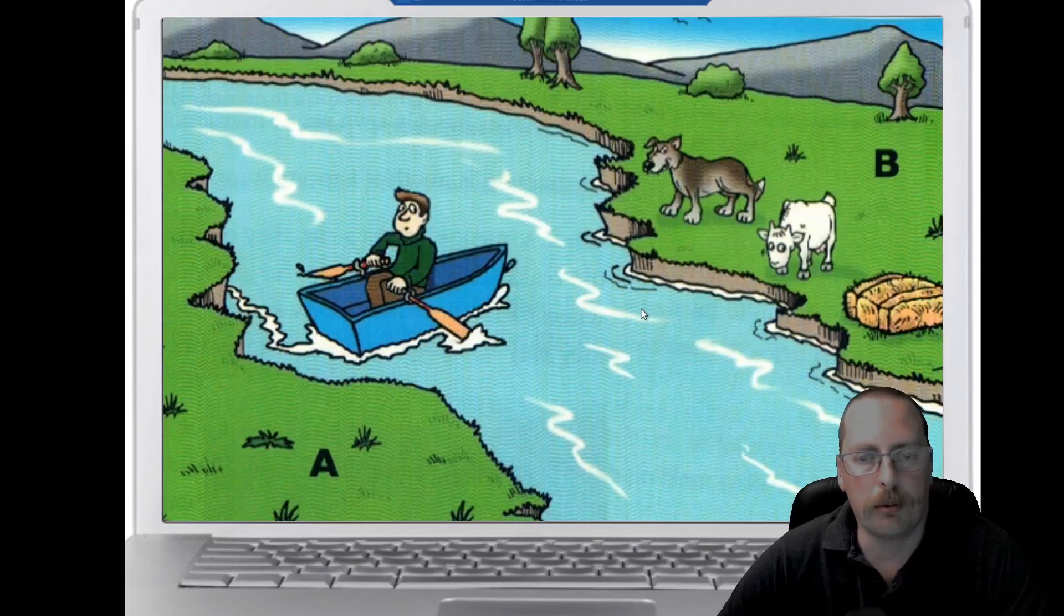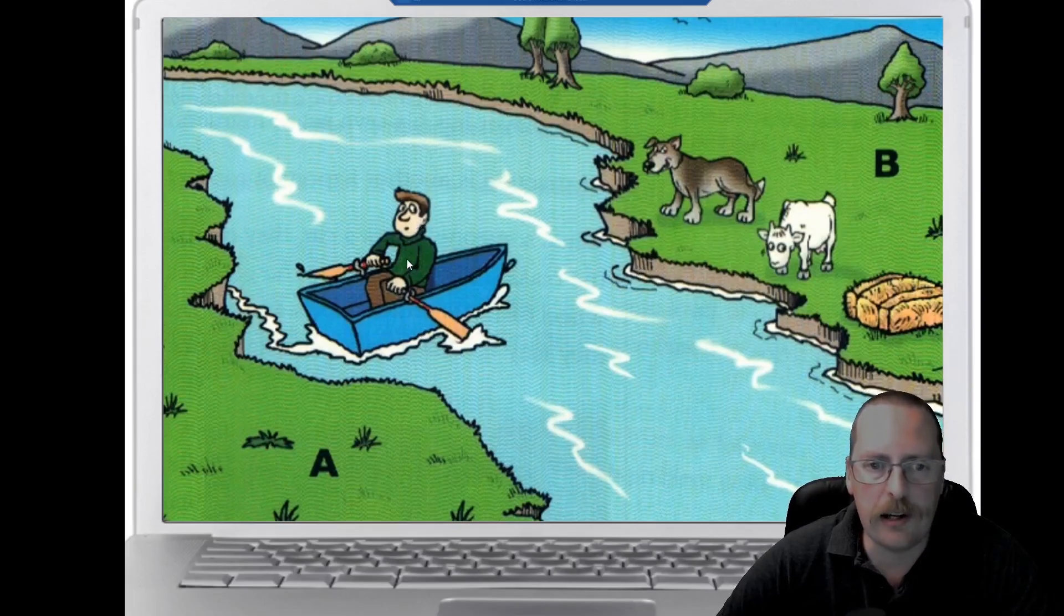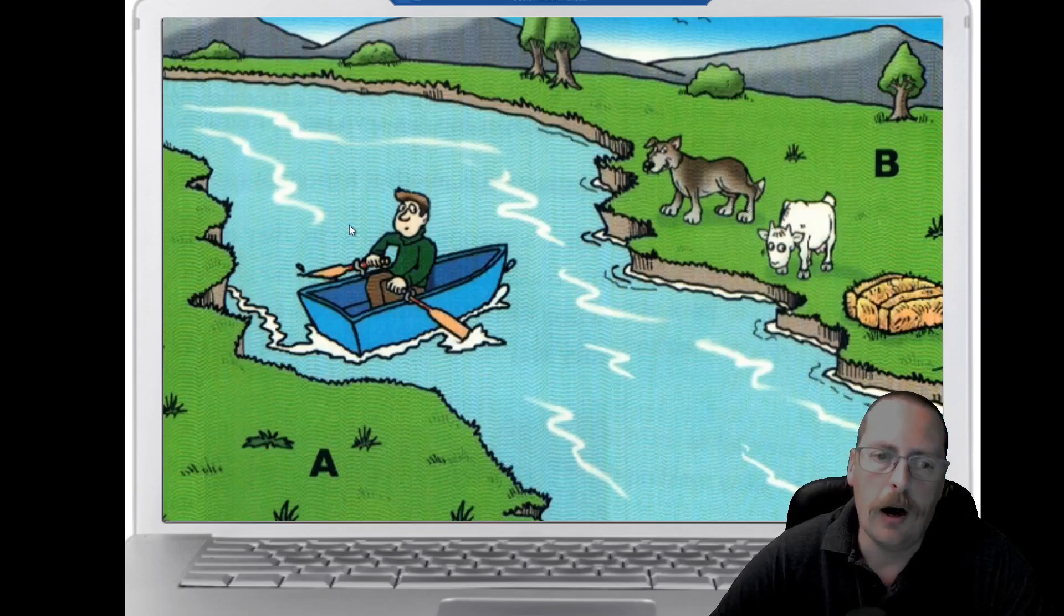Here's our problem, a river crossing problem. We've got a man here whose name is Fred. Fred, in the green jumper, he's got two oars and a blue boat, and he's going to cross this river that is 10 meters wide. We've got bank A and bank B. Fred needs to get the wolf, the goat, and the hay from bank B over to bank A.